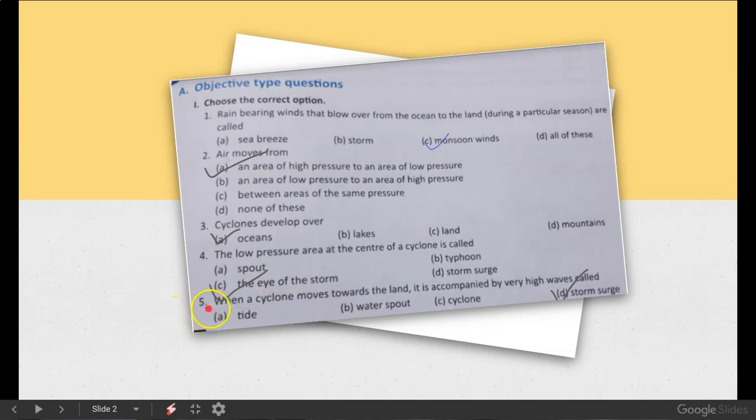Number 5. When a cyclone moves towards the land, it is accompanied by very high waves called tide, water spout, or cyclone. Storm surge is called the high waves that are accompanied by cyclone. Okay?